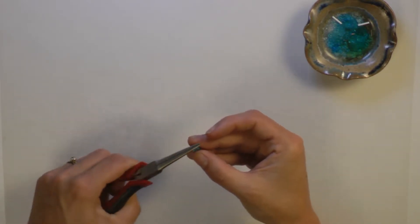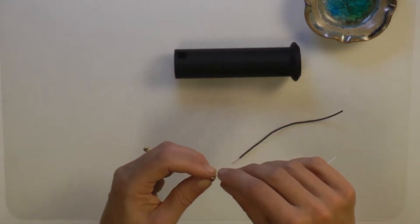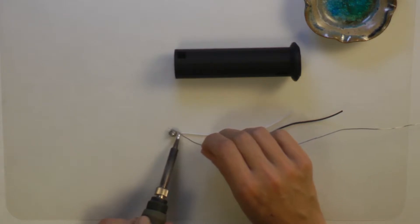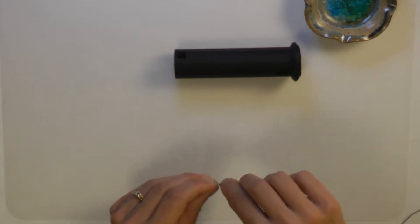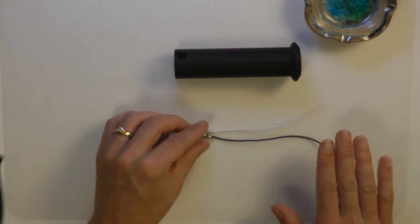Use pliers to flatten the legs of your button and solder a 6-inch white and black wire to the legs on one side. Cover them with heat shrink and cut off the legs on the other side.